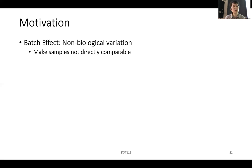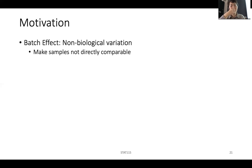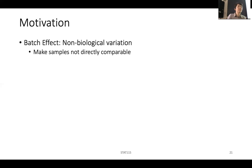Suppose these are all the same cancer type — how would you expect the samples to cluster? You have 20 pairs of data, which is 40 samples: 20 disease and 20 normal. Let's say breast cancer. Ideally, you want the samples to cluster by cancer and normal.